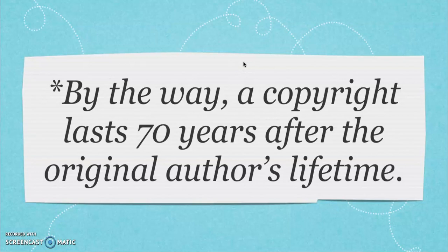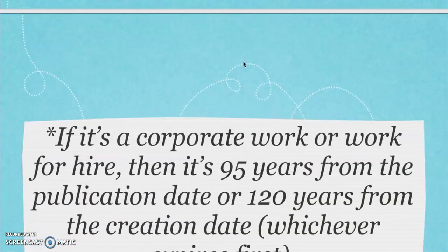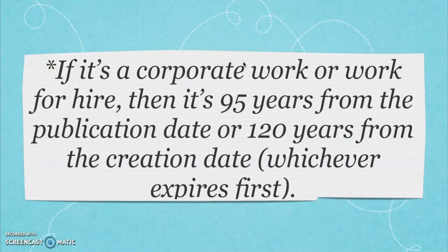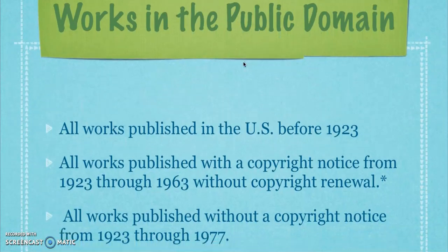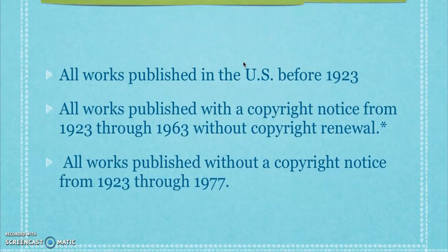A copyright lasts 70 years after the original author's lifetime — so the entire lifetime of that author plus 70 years after that, usually covering the author and their children. If it's a corporate work or a work for hire, then it's 95 years from the publication date or 120 years from the creation date, whichever expires first. All works published in the U.S. before 1923 are in the public domain.